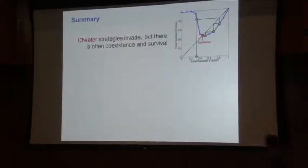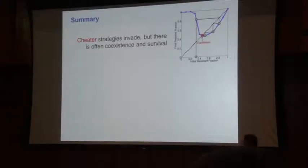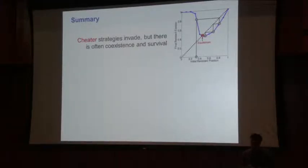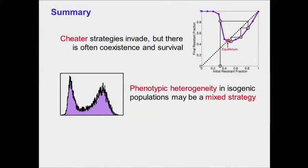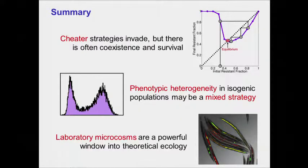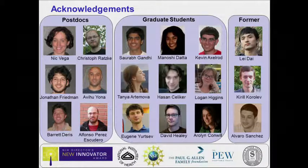To summarize: we find that cheater strategies invade but we get coexistence between cooperation and cheating — a very common theme in cooperative situations. We also argue that phenotypic heterogeneity in clonal populations could have a variety of evolutionary drivers, one of which is that it may be the implementation of a mixed strategy. More generally, using microcosms in the lab we can explore classic ideas in evolutionary dynamics and theoretical ecology. Thank you to the group doing the work and the Allen Foundation — happy to take questions.